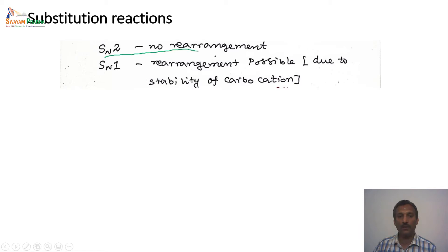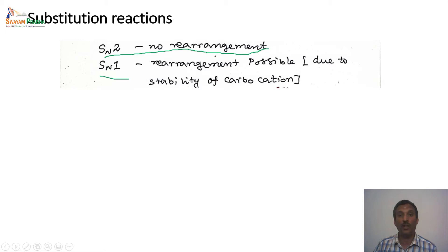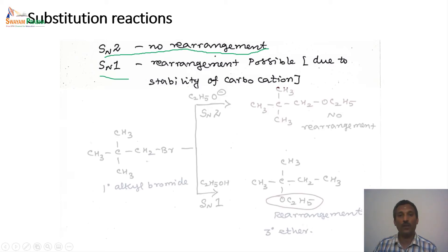In the case of SN2 reactions, there is no rearrangement because it is a concerted, single-step mechanism — no ionic intermediate is involved, so no rearrangement is possible. Whereas in the case of SN1 reactions, a carbocation intermediate is formed, which can undergo rearrangement because the stability of the formed carbocation determines whether a more stable form will result.